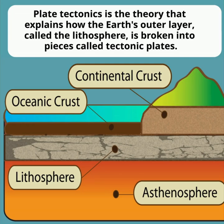These plates float on a softer, more fluid layer beneath them, the asthenosphere, and even though they move slowly — just a few centimeters per year — this movement shapes the Earth's surface over millions of years.